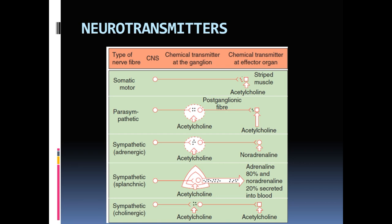There are two main types of neurotransmitters in the autonomic nervous system. The first is acetylcholine. The second is noradrenaline, or norepinephrine and epinephrine. The neurotransmitter secreted most among these is norepinephrine or noradrenaline. So the two main types are acetylcholine and noradrenaline/norepinephrine.